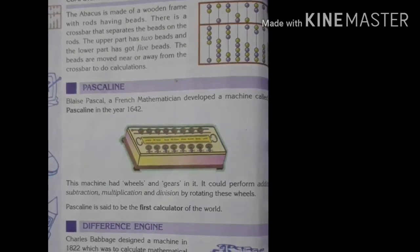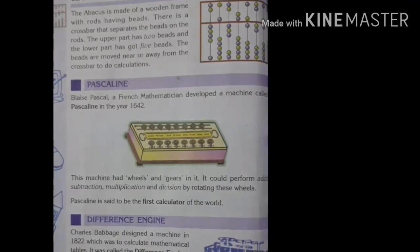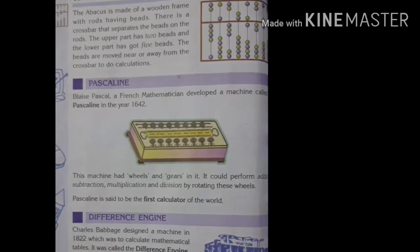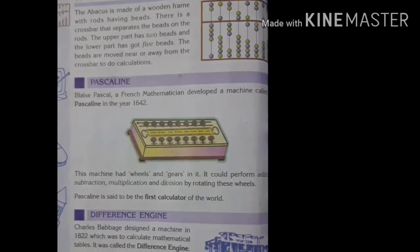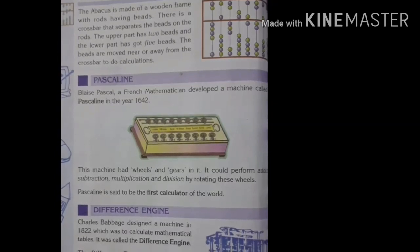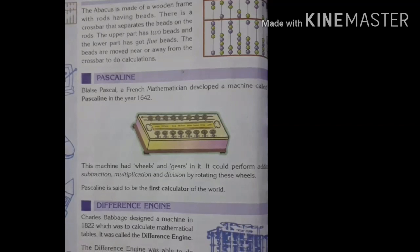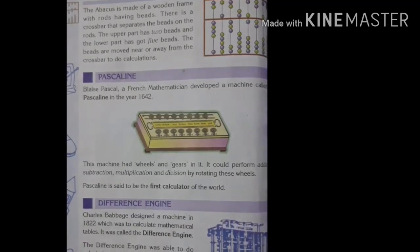Pascaline: Blaise Pascal, a French mathematician, developed a machine called Pascaline in the year 1642. This machine had wheels and gears in it. It could perform addition, subtraction, multiplication and division by rotating these wheels. Pascaline is said to be the first calculator of the world.